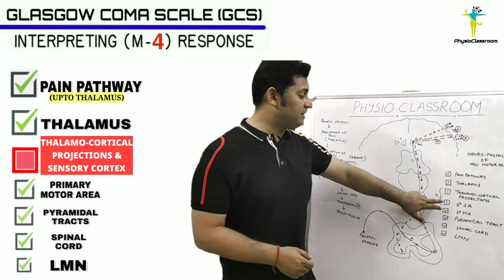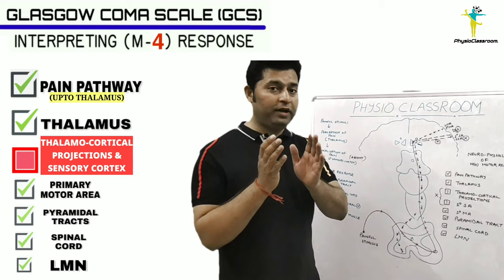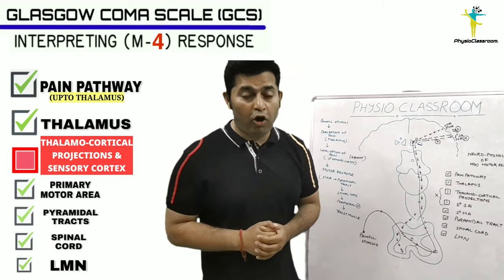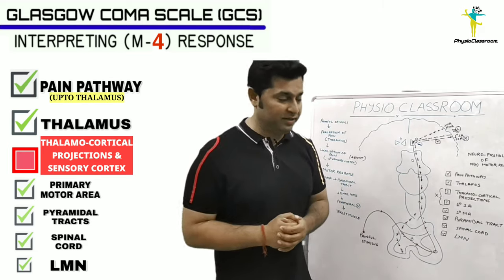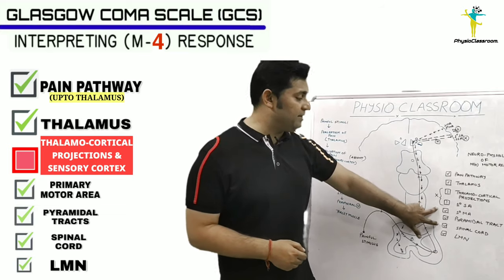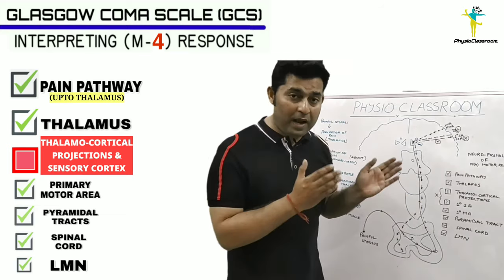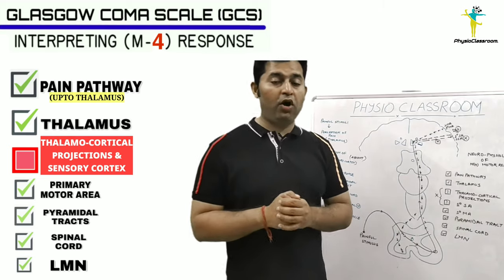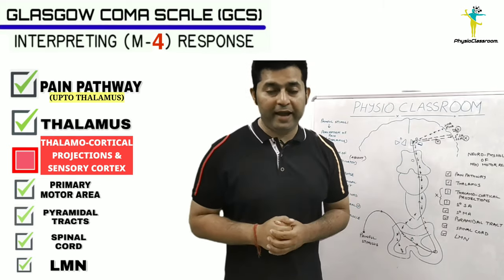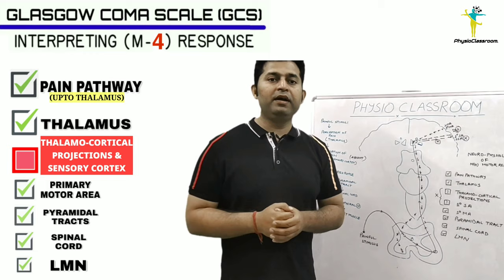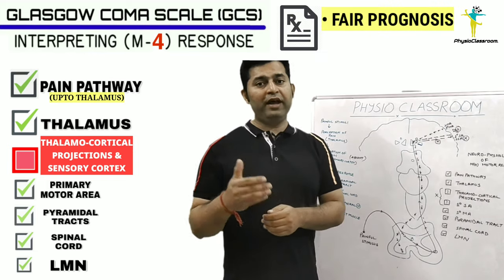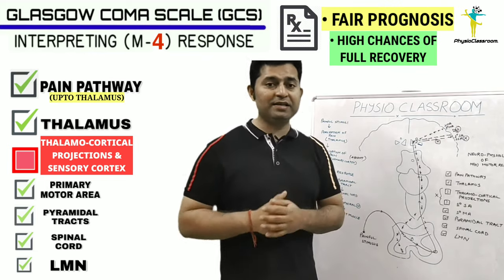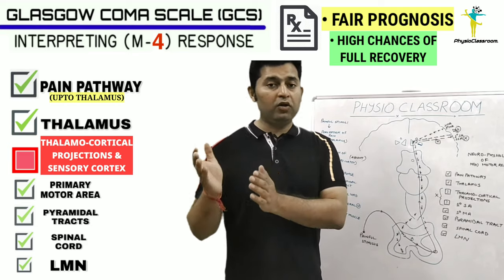The thalamus itself is functioning almost normally, but there is some problem with the thalamocortical projections as well as the functioning of the parietal sensory cortex. The remaining structures — that is, the primary motor area, pyramidal tracts, spinal cord, and the lower motor neuron — are intact and functioning normally.